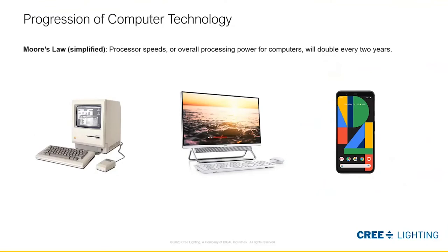As we look at computers themselves, one principle you've probably heard before is Moore's Law. Simplified, it's basically the concept that the processing power of computers and component technology will double every two years. You can see some examples of technology progression — some of you may remember playing Oregon Trail or early floppy disk games on a Mac, to modern much more sleek systems, to modern smartphones. Some of you have heard how much more powerful today's smartphones are than the rocket ship that first landed humans on the moon.